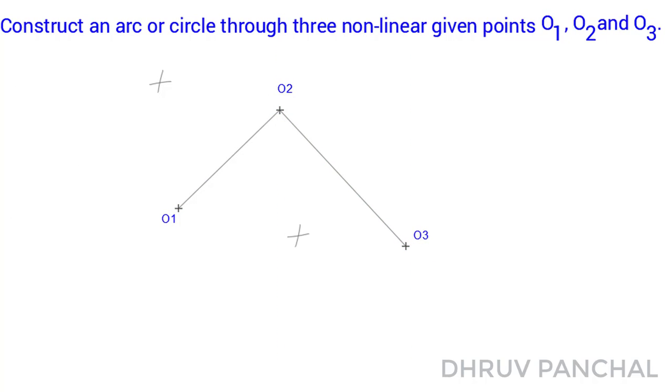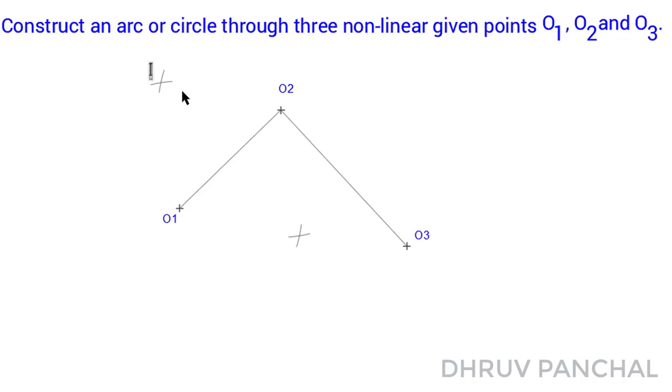By using perpendicular bisector method, bisect line O1-O2 with the help of compass and name the intersecting points of an arc by point A and point B, and connect these points with the help of line.